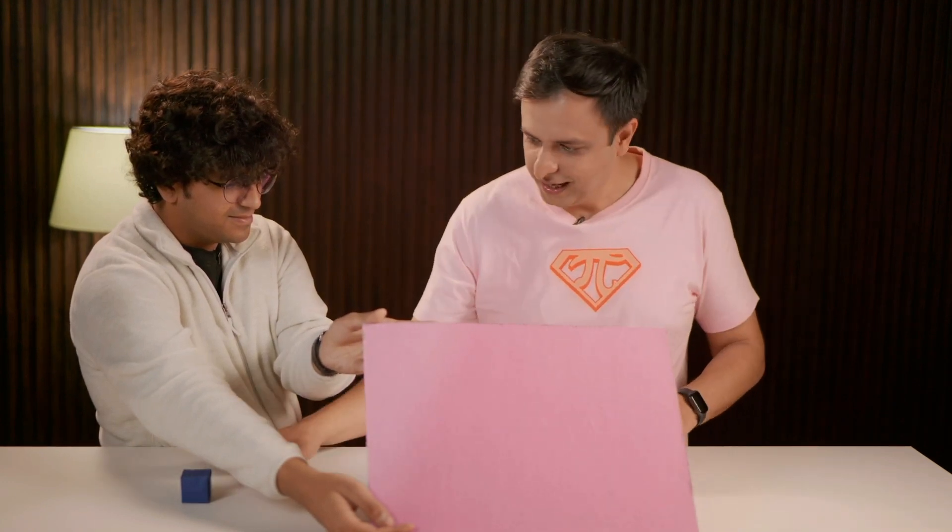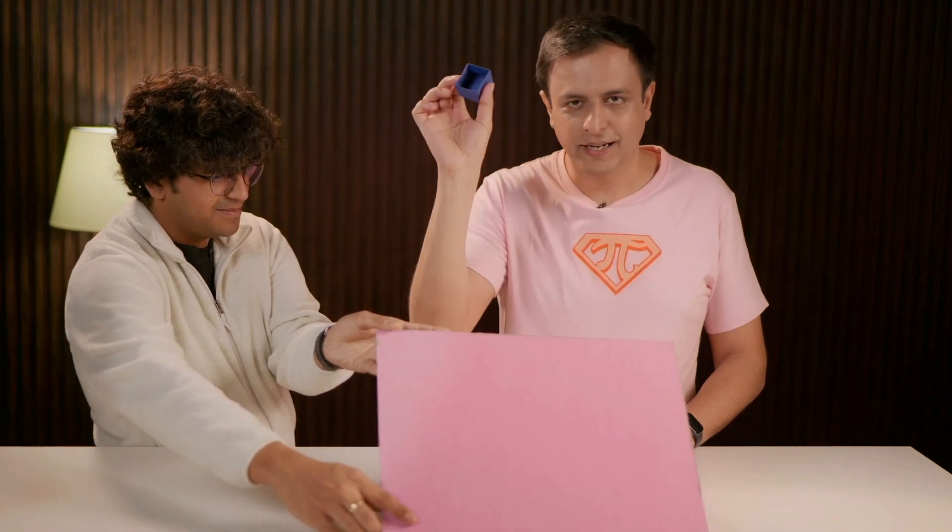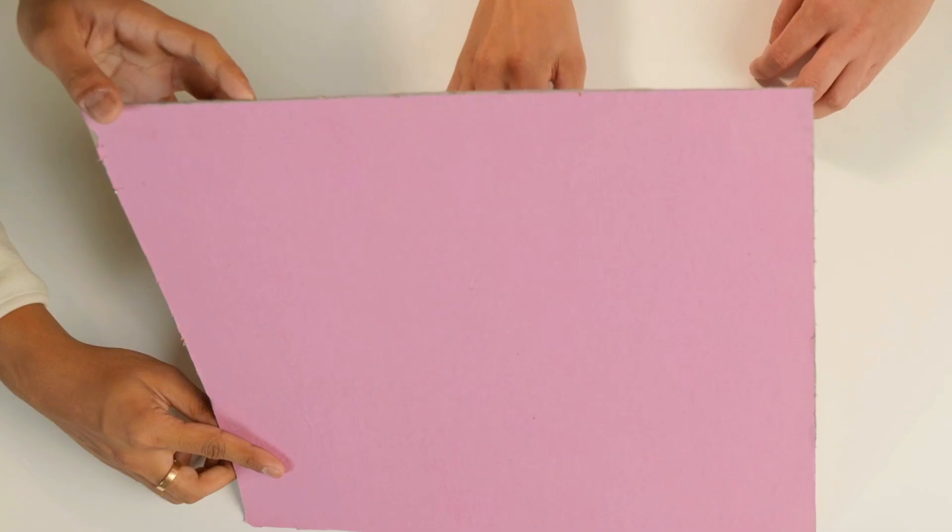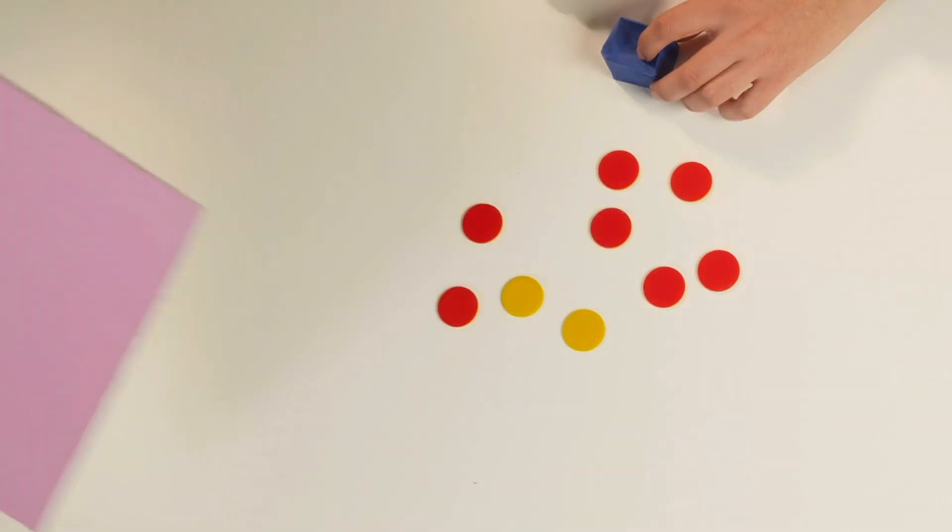Okay. And now I'm going to hide one coin randomly. Dhruv, can you take this away? What color am I hiding? Okay.